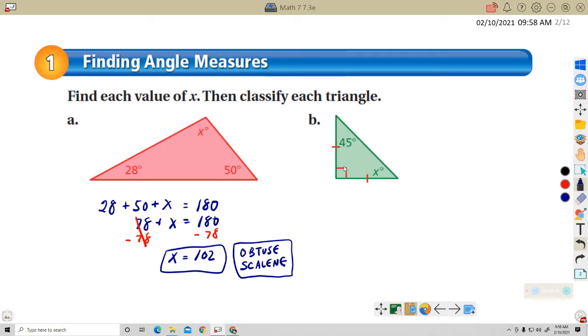For B, when we see this little indication here that looks like a square, that means this is a right angle. And if it's a right angle, it's equal to 90 degrees. We have a 45, a 90, and an x. So let's add those together. 45 plus 90 plus x equals 180. 90 plus 45 is 135 plus x equals 180.